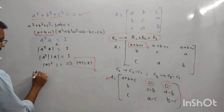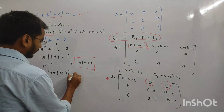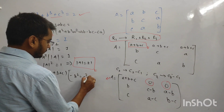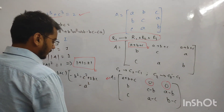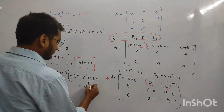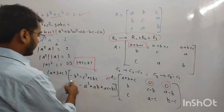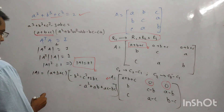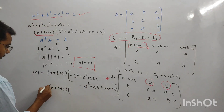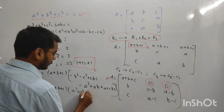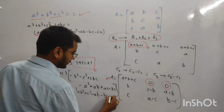अब इसका determinant निकालो। |A| = (A+B+C) के across expand करने पर: minus of (B² + C² + 2BC) minus of (minus A² + AB + AC - BC) आएगा। Factor out करो: minus निकाल लो। तो |A| = (A+B+C) × (-(A² + B² + C² - AB - BC - CA)).